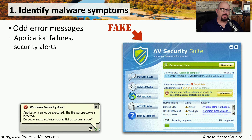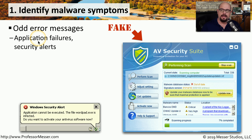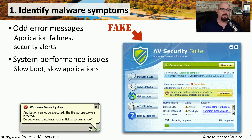If strange things are happening on your computer, you may be infected with malware. You're looking for messages appearing on the screen that describe application failures. It may have security alerts on the screen, slow performance of the system, a long time to boot, and once the system is running, applications may be running more sluggishly than normal.